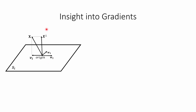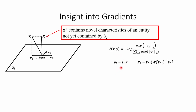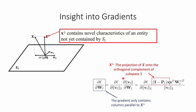Consider a subspace S defined by two bases W1 and W2. We have a feature vector x, and the corresponding capsule on this subspace is vL. The component x-perpendicular contains novel characteristics of this sample that the subspace cannot yet represent. We take the gradient of the loss function with respect to the bases of this subspace. Using the chain rule, we arrive at a formulation where, despite its daunting look, there is a key point: in this gradient, we only have columns that are parallel to x-perpendicular.